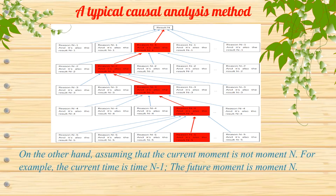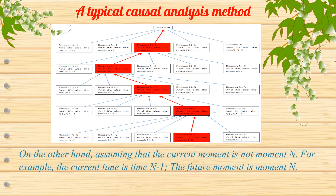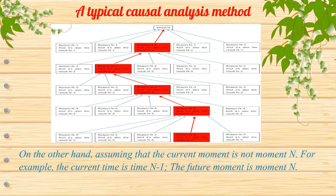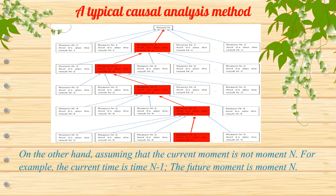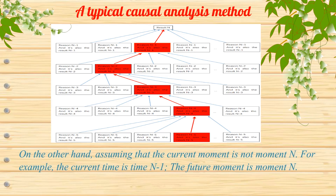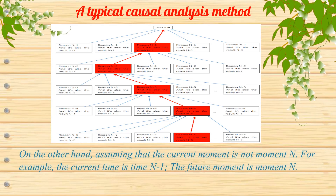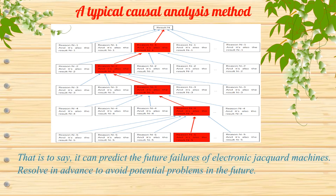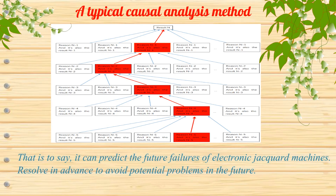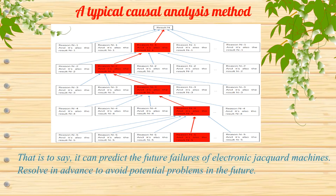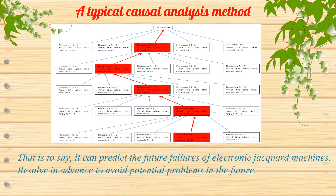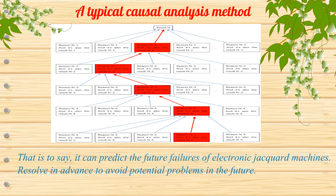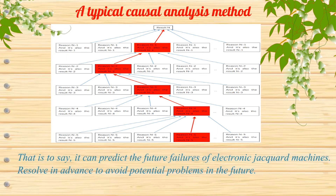On the other hand, assuming that the current moment is not moment n — for example, the current time is time n1 and the future moment is moment n — it is possible to predict the future failures of electronic jacquard machines and resolve them in advance to avoid potential problems in the future.